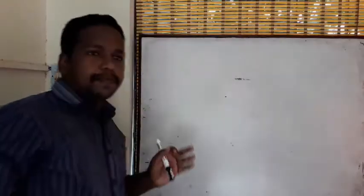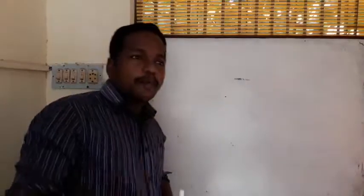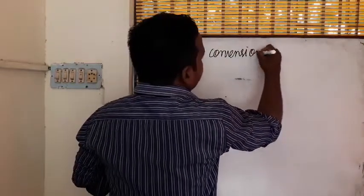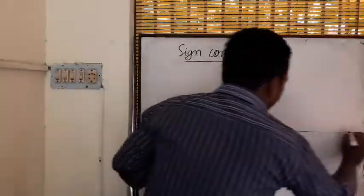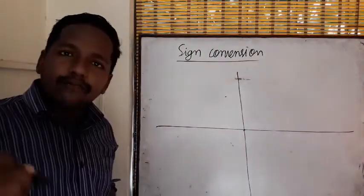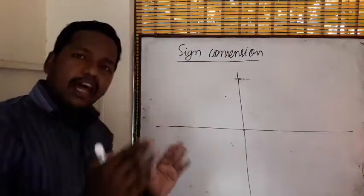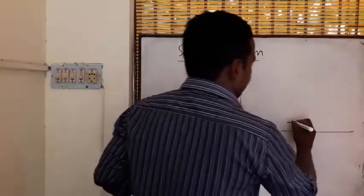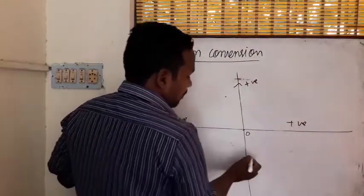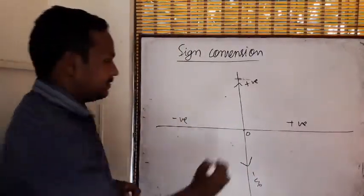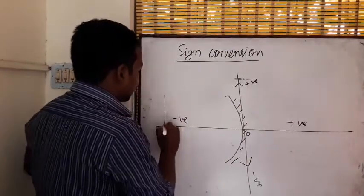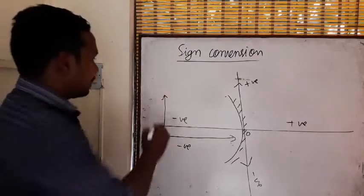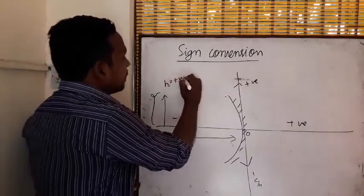This is a full review of the light chapter, so watch everything to understand all topics. Sign convention is based on a normal graph. The origin is: for a mirror — the pole; for a lens — the optical center. Left of the origin is negative; right of the origin is positive. Above the origin is positive; below the origin is negative. For a concave mirror, the object placed to the left means the object distance is negative. Object height above the principal axis is positive.